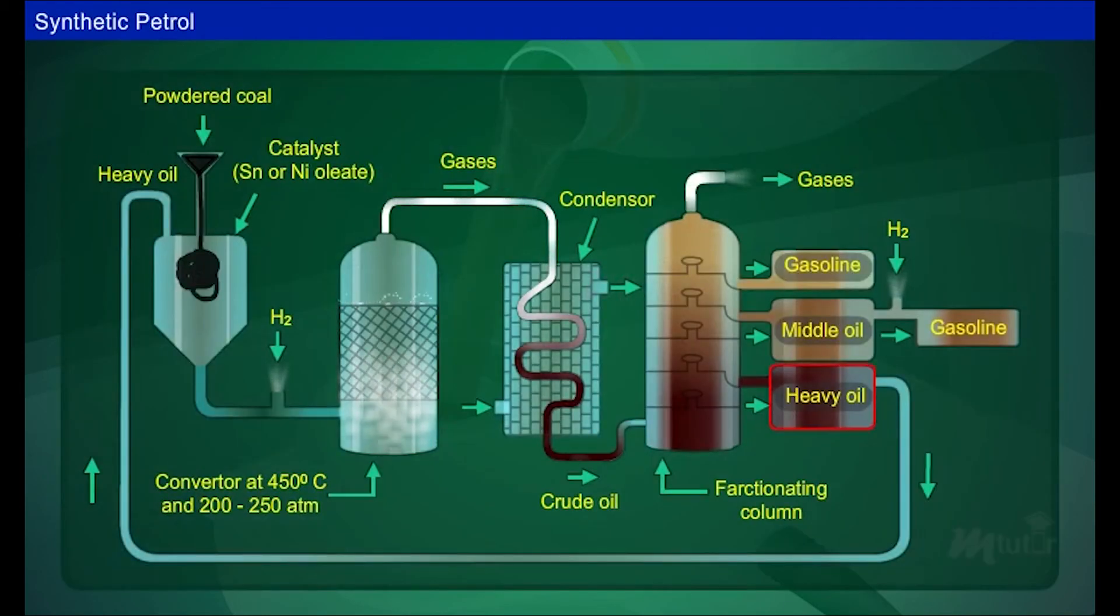The heavy oil is used for making a paste with fresh coal. The middle oil is hydrogenated in vapor phase to get more gasoline.